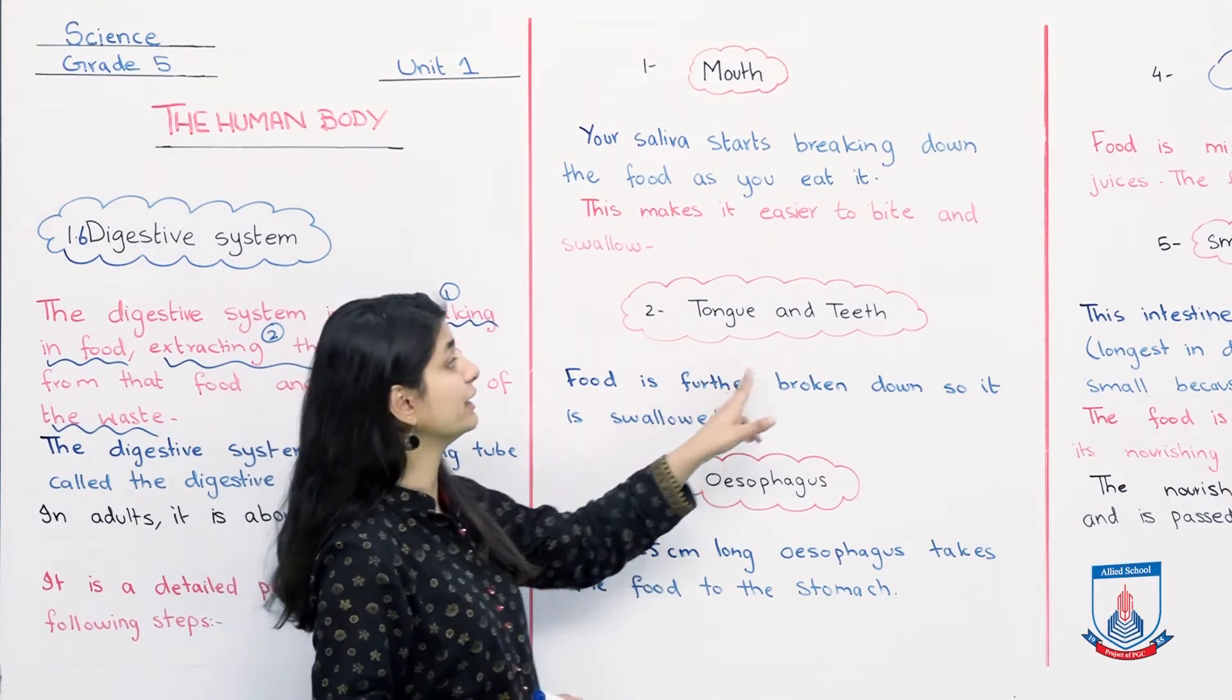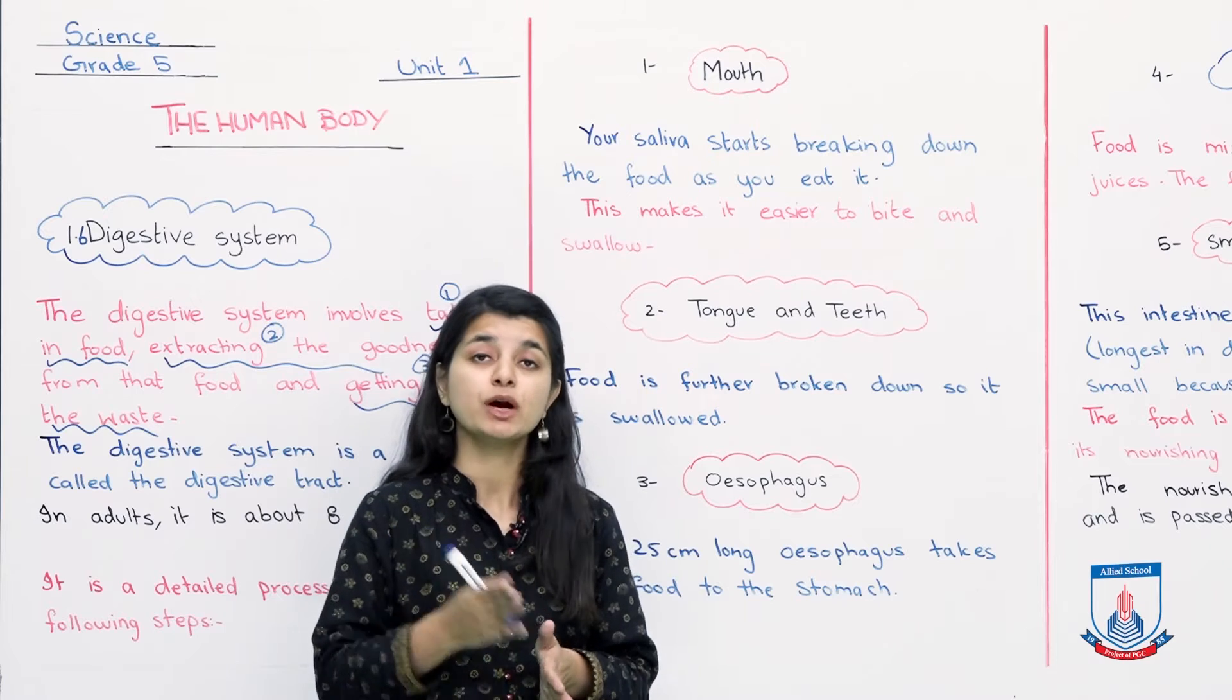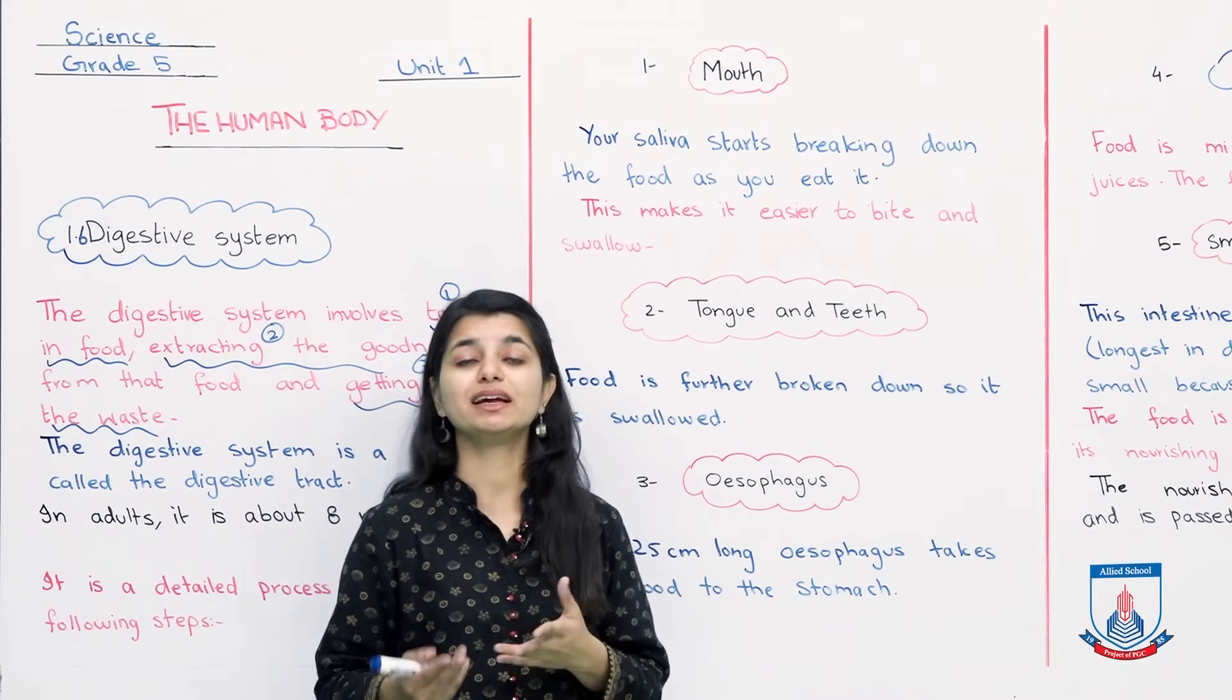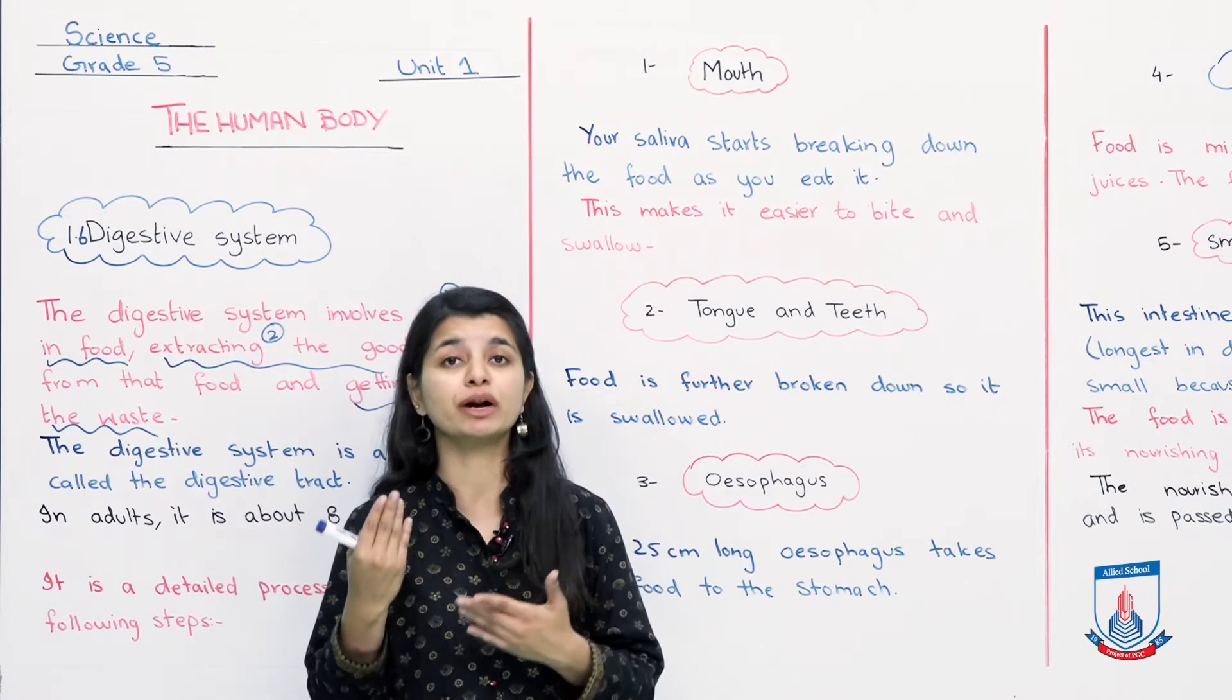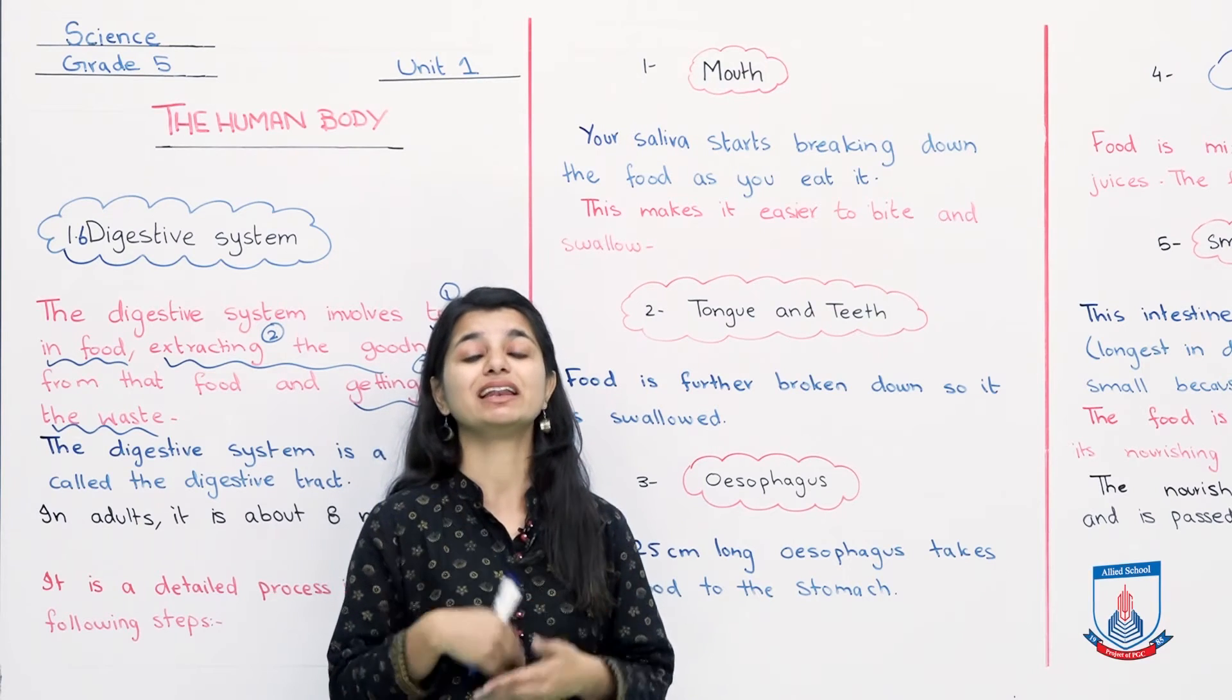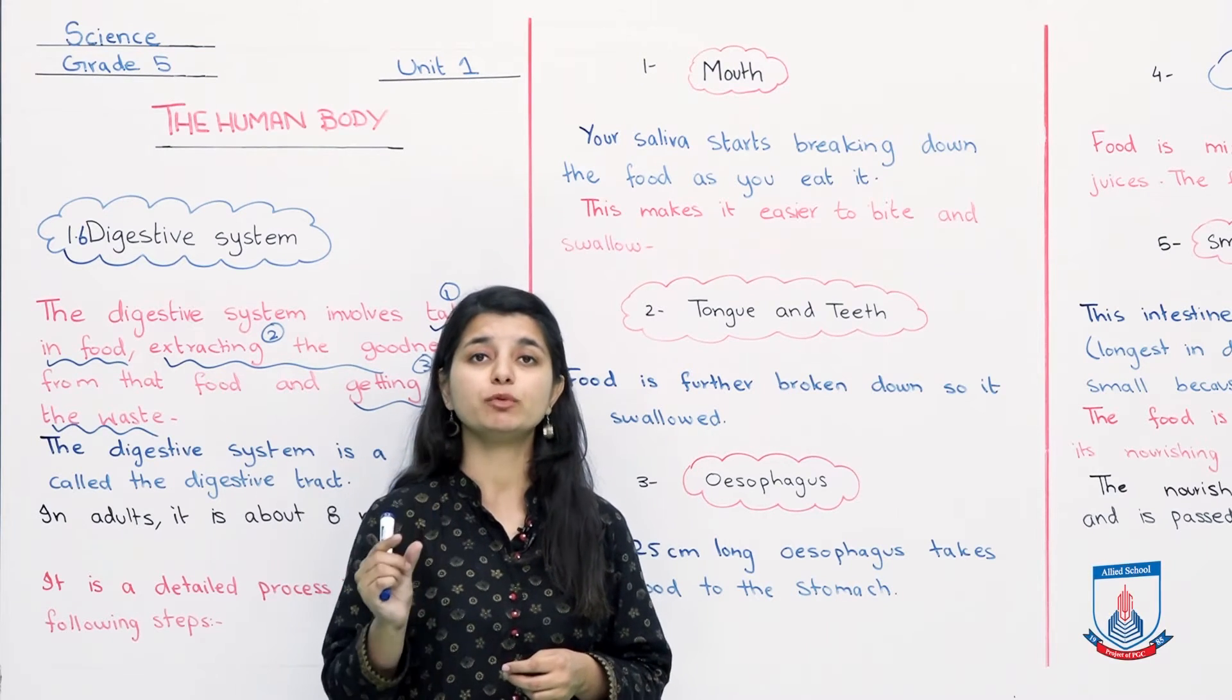In step 2, your tongue and teeth play a role. After the saliva impacts the food, your tongue and teeth further break down the food so it can be swallowed. When you chew and bite, you break the food into small pieces so that it can be swallowed easily. You should chew it well so that it can be swallowed in smaller portions.